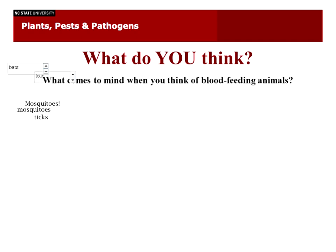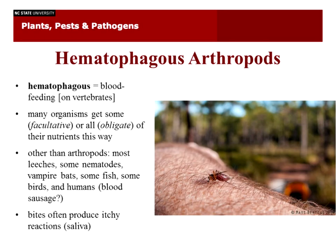We got bats and mosquitoes, the only blood-feeding animals — just joking. Ticks — that's a good one. Leeches. So those are probably some really common ones that people think of. Today I will talk about hematophagous arthropods. Hematophagous is just a fancy word for blood feeding, usually on vertebrates. There really isn't a technical term for feeding on insects, which I'll talk about in a minute. Many organisms on our planet actually get some or all of their nutrients by feeding on blood.